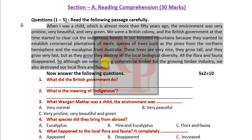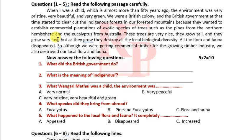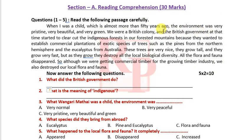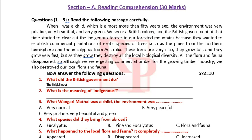The first reading comprehension has been given from the environment lesson. Five questions have been given. The first one: what did the British government do? The British government started to clear-cut the indigenous forest.